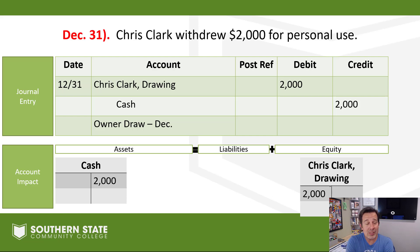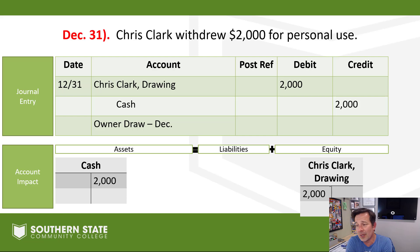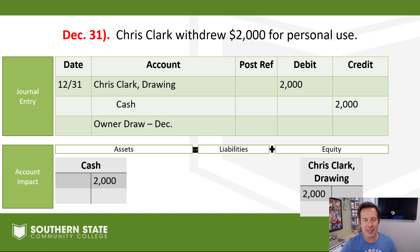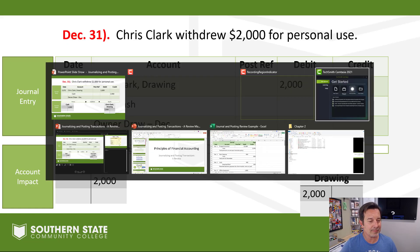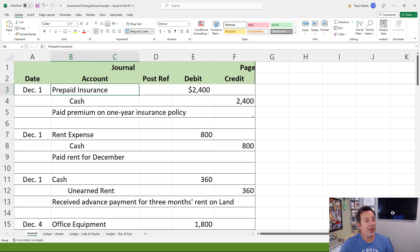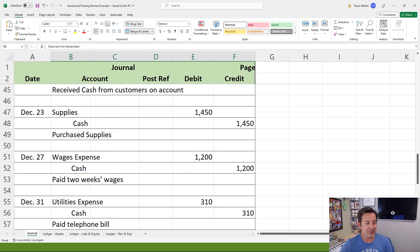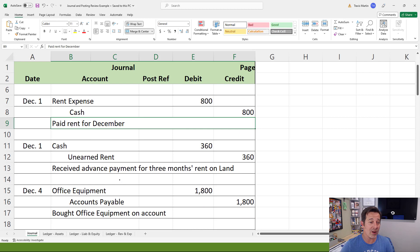Next we need to post all of those transactions — and I'm sure your heart just sank because we just went through 18 transactions. If you need to take a little break, feel free to pause and come back to it. I'm going to show you a couple of examples of how we post, then let you do the remainder, and I'll show you the solution so you can check your work. On the journal tab in the spreadsheet, we have all 18 of the transactions we just went through, right there for your viewing pleasure.